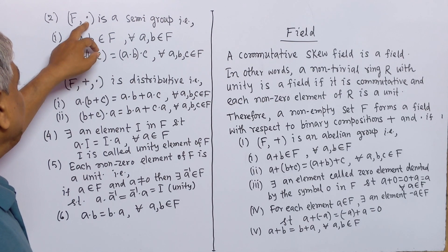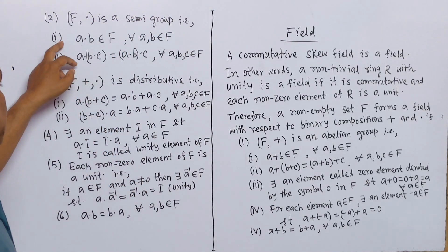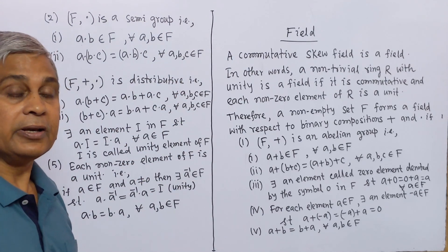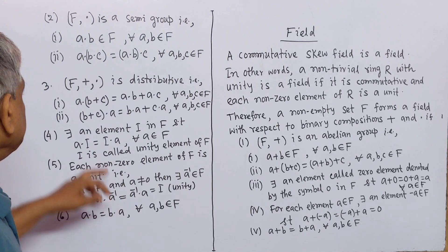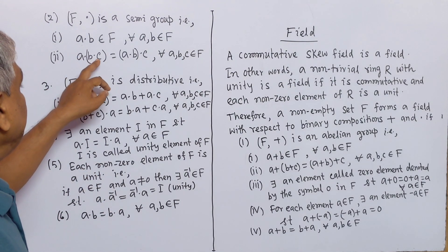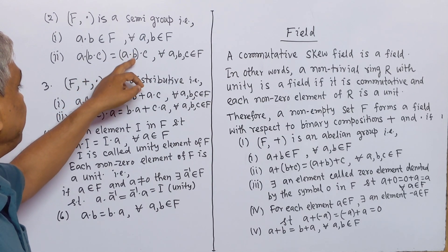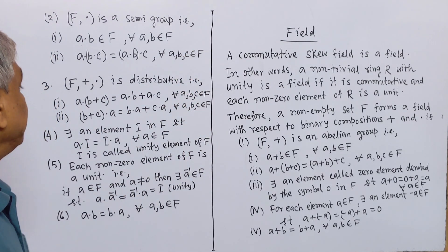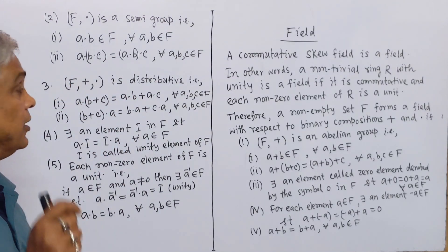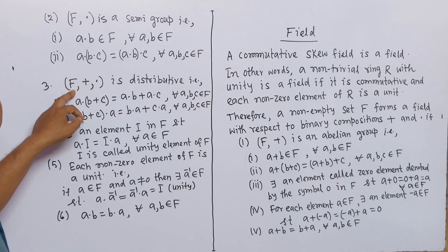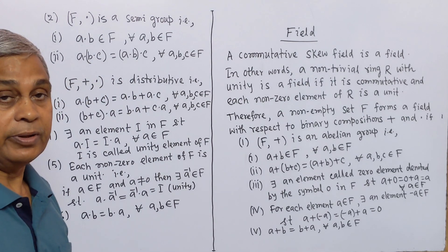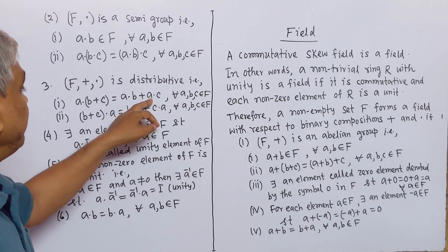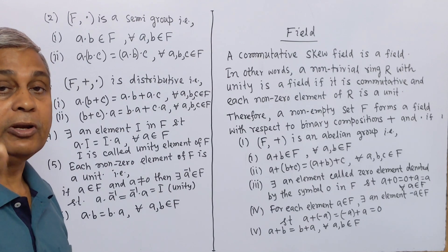Number 2: F with binary composition multiplication is a semigroup. That is: (1) a·b belongs to F for all a, b in F — closure property for multiplication. (2) a·(b·c) = (a·b)·c for all a, b, c in F — associative property for multiplication. (3) F with binary compositions addition and multiplication is distributive: a·(b + c) = a·b + a·c for all a, b, c in F.